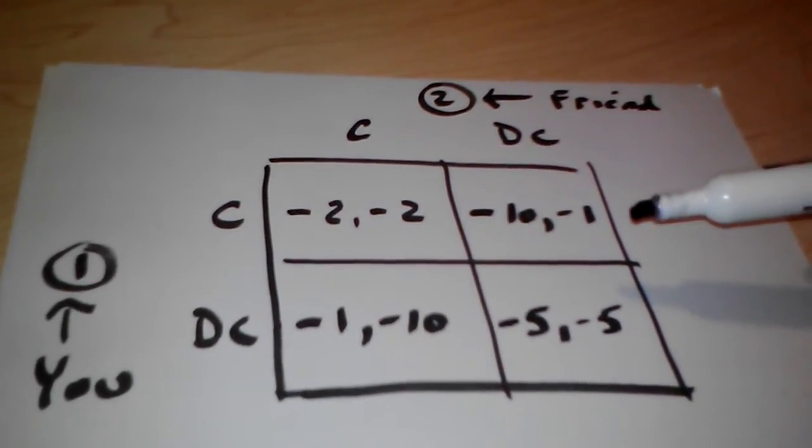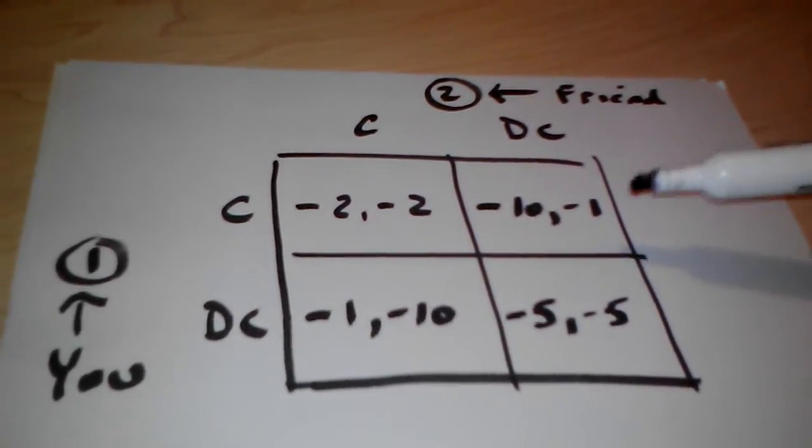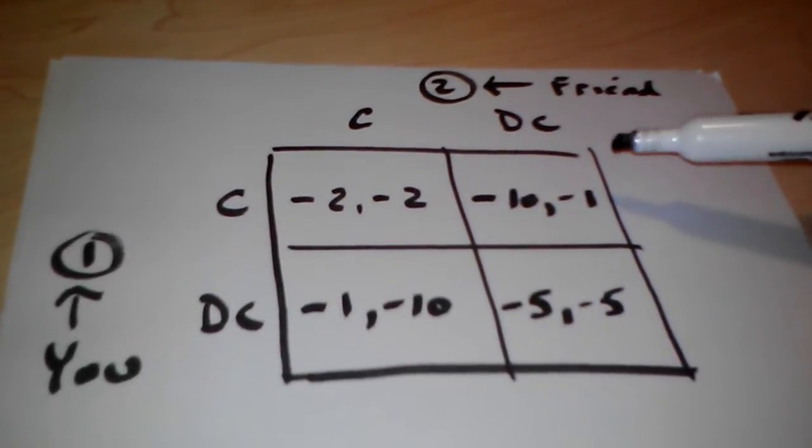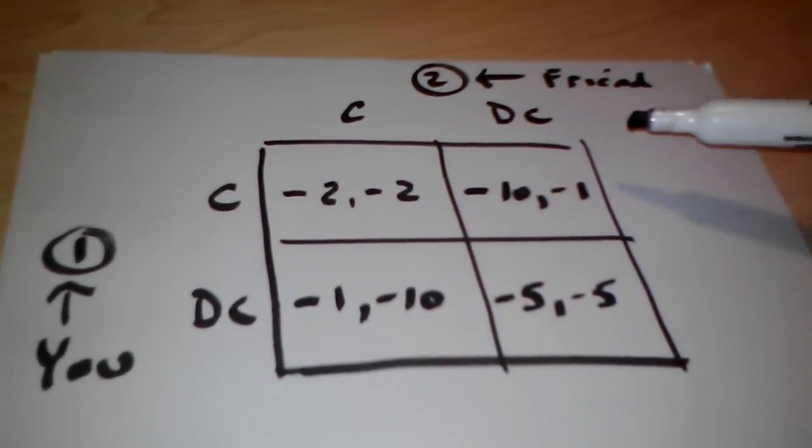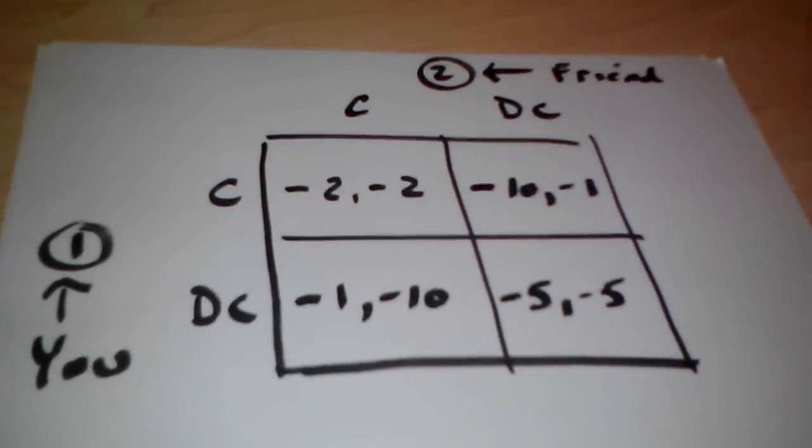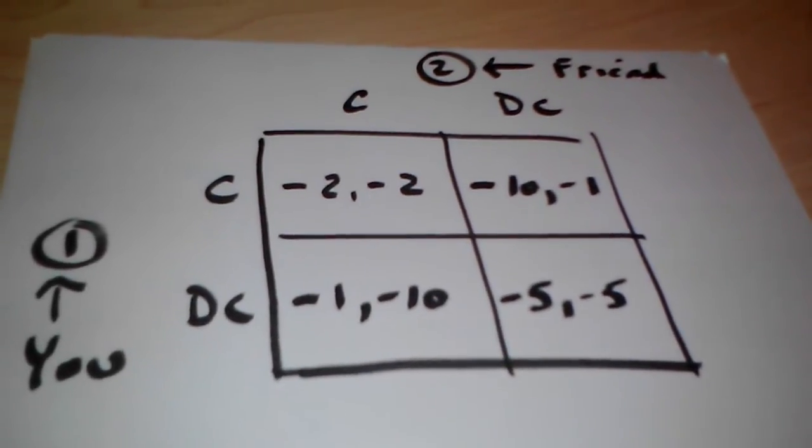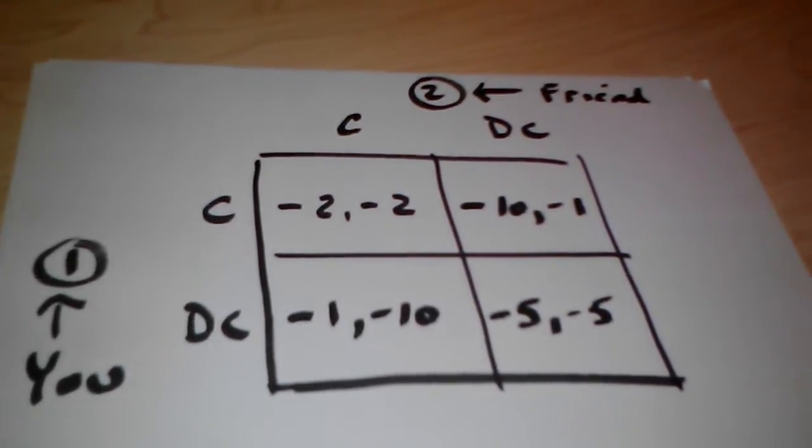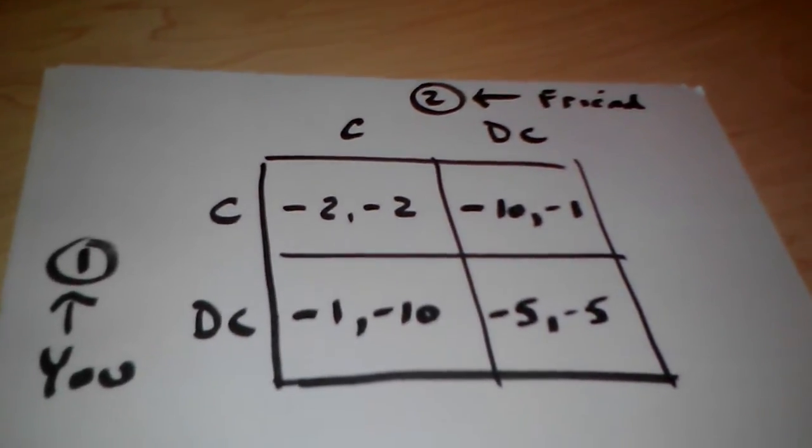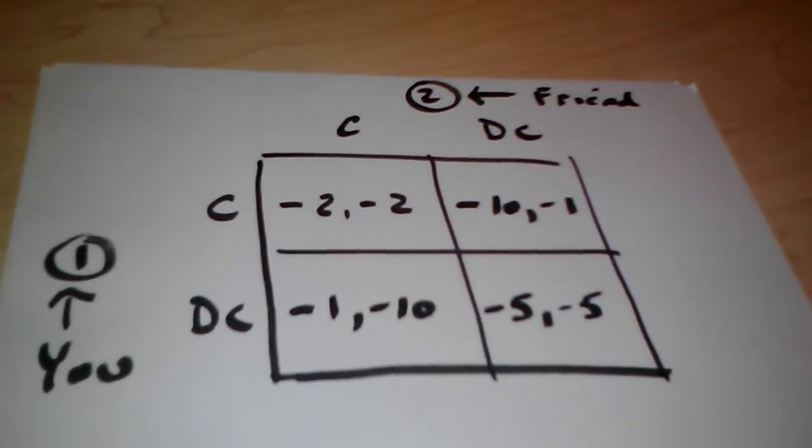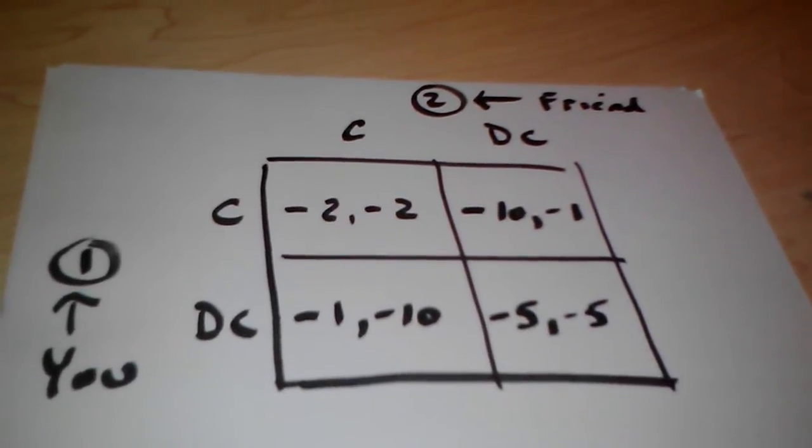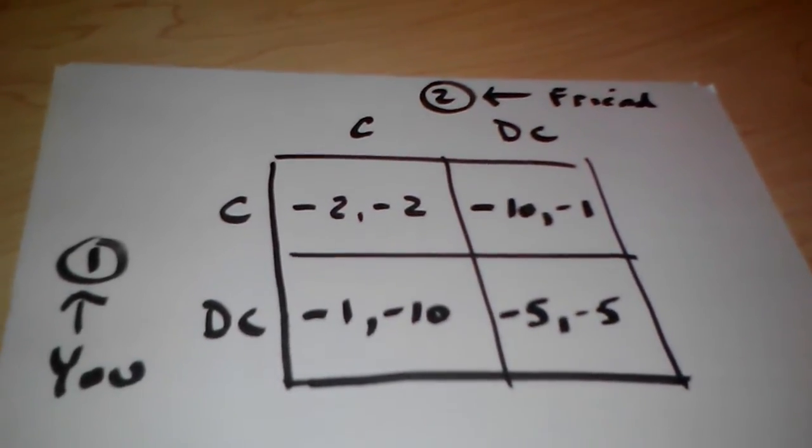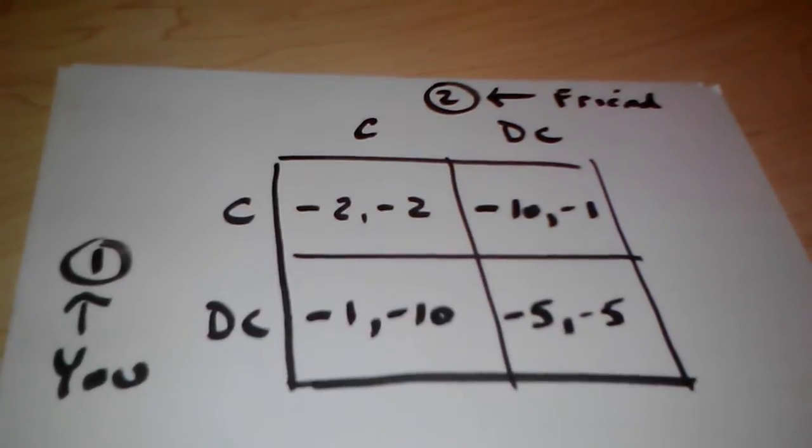So when you solve the game, one of the things that you don't want to do is try to intuitively solve the game. For example, look at the four boxes and say, oh, I think that this is the best or that's the best. If you do that, you're almost always going to get the incorrect answer in terms of how you would solve for an equilibrium in a game theory game. So it may seem rational to you, but the way that we solve a game theory game is relatively specific.